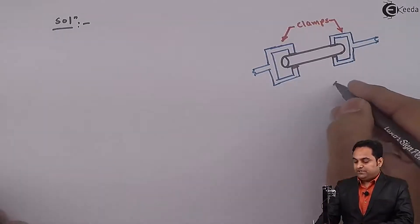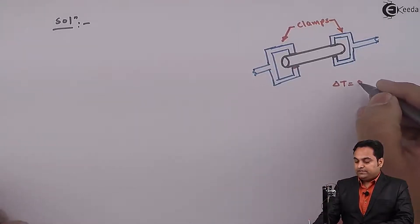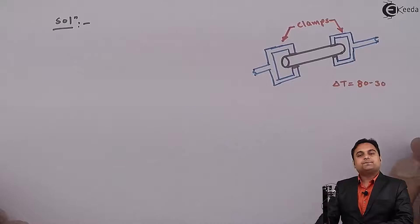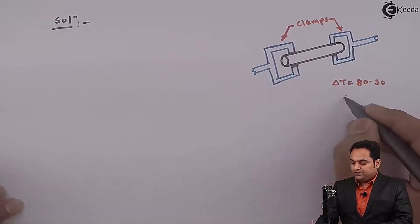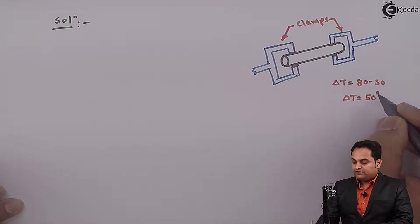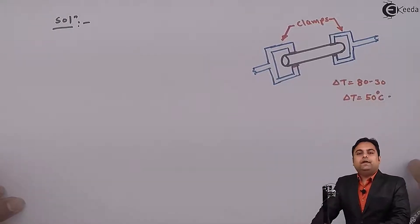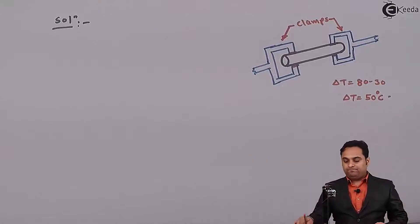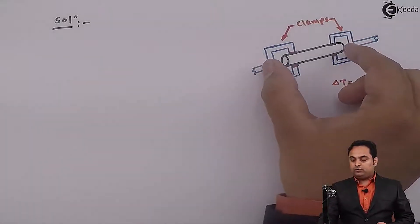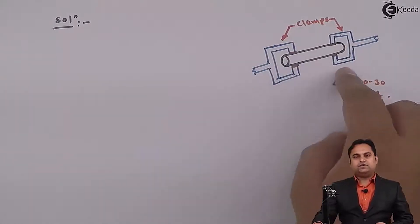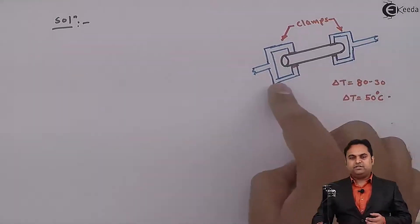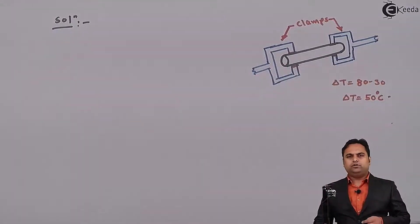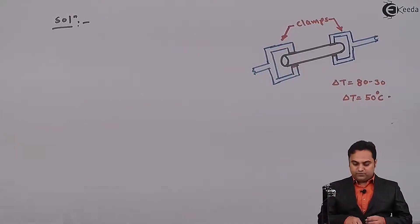The total temperature difference is 80 minus 30 degree Celsius — first it is heated up to 80 degree Celsius and then allowed to cool to 30 degree Celsius. So the temperature change becomes 50 degree Celsius. When it is allowed to cool, this metal rod will try to contract, but because of the presence of the clamps they will try to avoid that contraction, allowing only 1 mm.